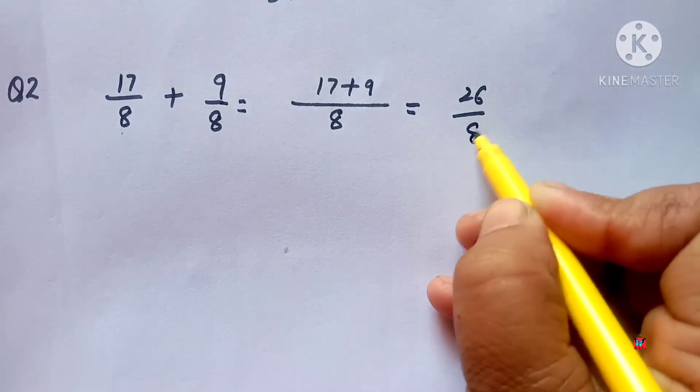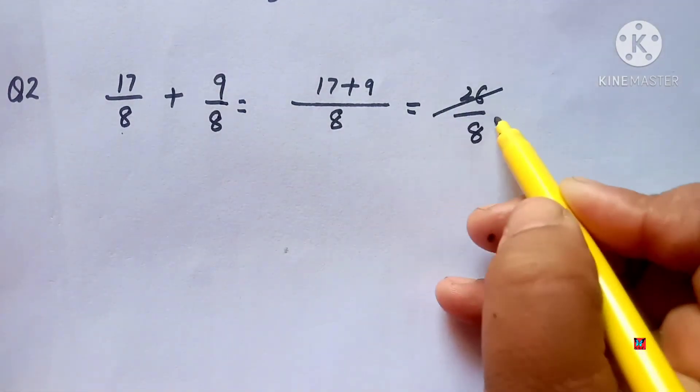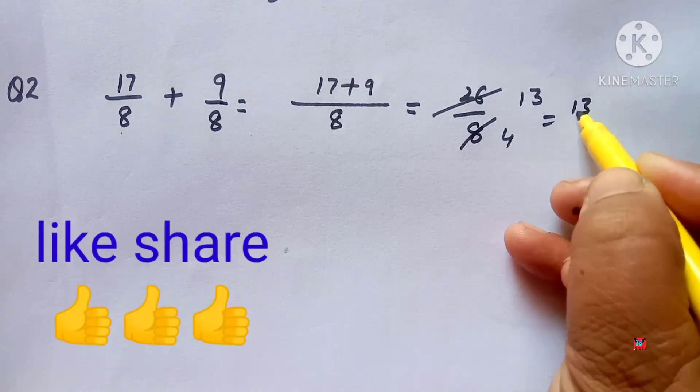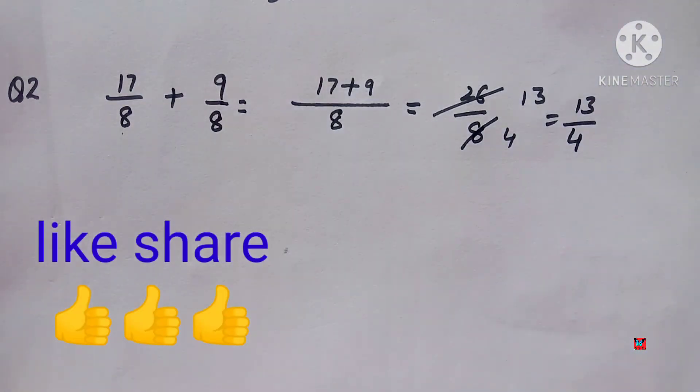17 plus 9 equals 26 upon 8. Now simplify this: 2 divides 8 to give 4, and 2 divides 26 to give 13. So the answer is 13 upon 4.